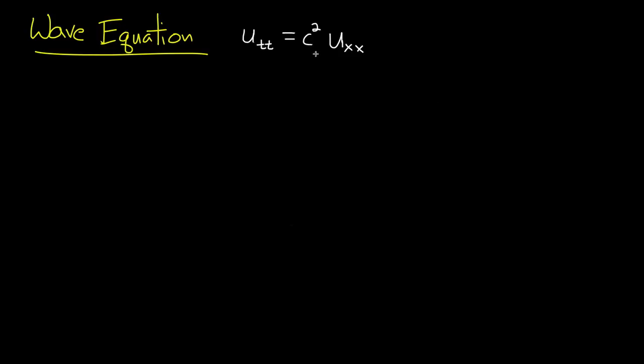So this c squared is a constant, and so really you have a whole family of wave equations, one for every choice of value of c. Now it may look a little funny at first, the fact that this is a c squared rather than just say a c. And there's a couple reasons for that.